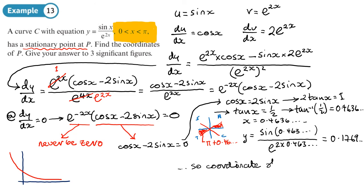So coordinate: x coordinate of P, three significant figures, 0.464, and the y coordinate 0.177. So I will just highlight that final answer there for that question.